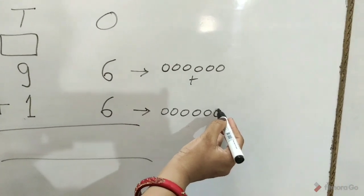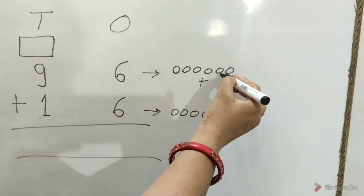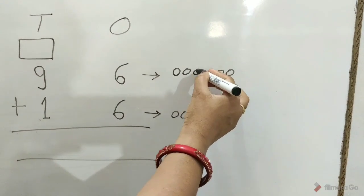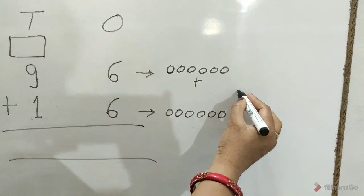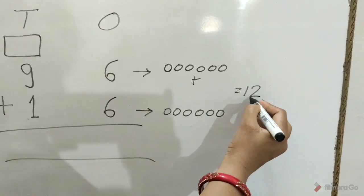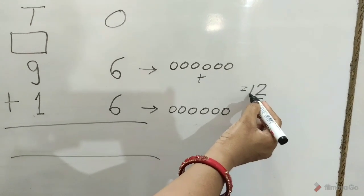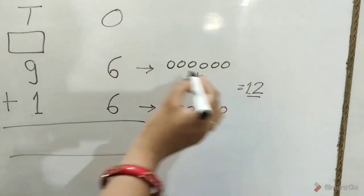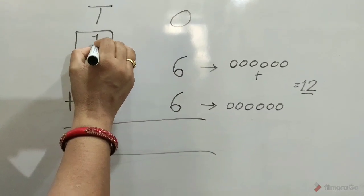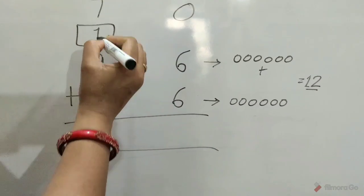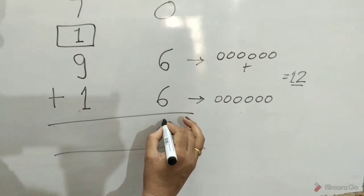We count all together: 1, 2, 3, 4, 5, 6, 7, 8, 9, 10, 11, 12. Total numbers are 12. So we regroup here. 1 ten will go carry at tens place and 2 ones right under ones.